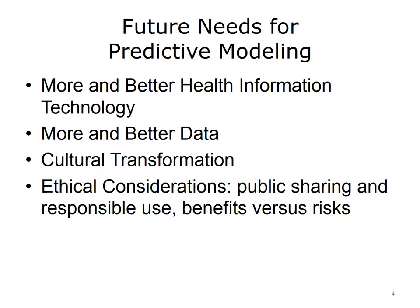What do we need to better complete risk adjustment and predictive modeling? We must improve the systems we use to deliver health information technology. More importantly, however, our data must improve in quality. We need more sources of data. And we need our cultural systems — how people think, feel, and react to risk scores and models — to change. We must also reflect on the ethical considerations in more detail: how and when to share, what is acceptable to society and individuals, and how we manage benefits and risks.